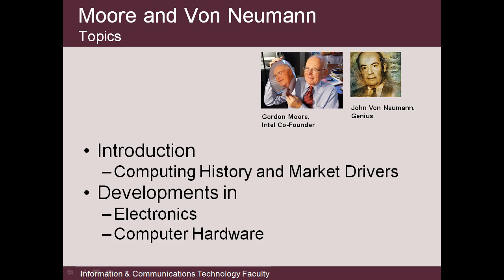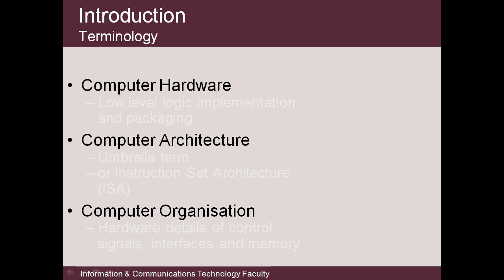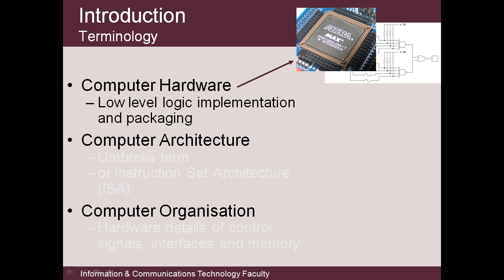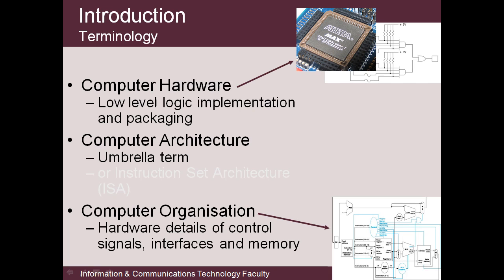First off, some terminology and an outline of the things we're going to be talking about. Books on this topic have titles including the words computer hardware, computer architecture, and computer organization, used somewhat flexibly. Respected sources like Hennessy restrict computer hardware to mean low-level logic implementation and packaging, and use computer architecture as the overall term, and computer organization to refer to the structural and hardware details of control signals, interfaces, and memory.